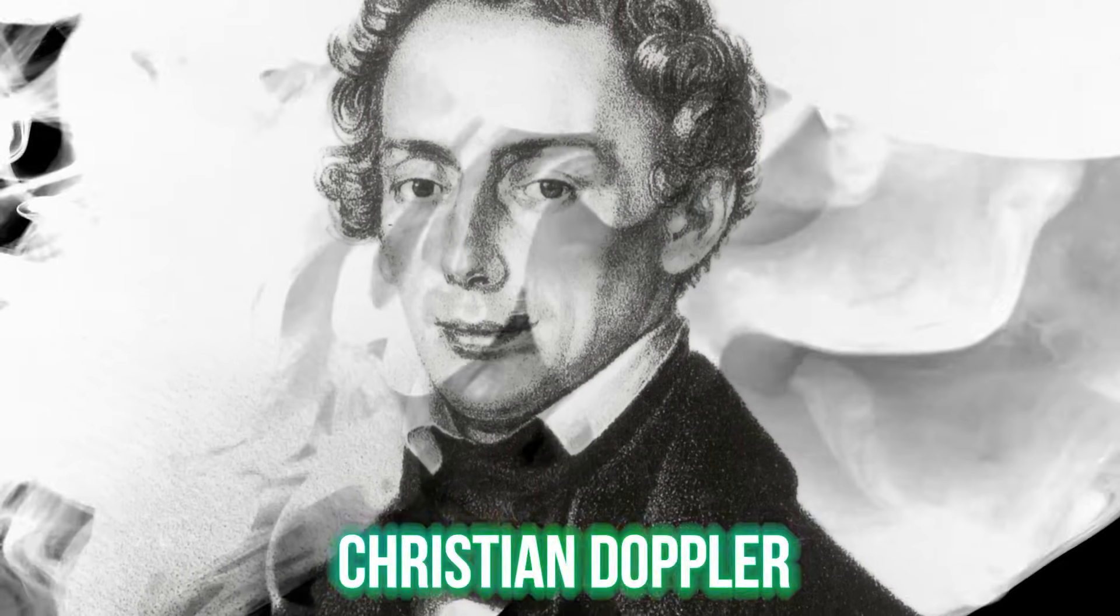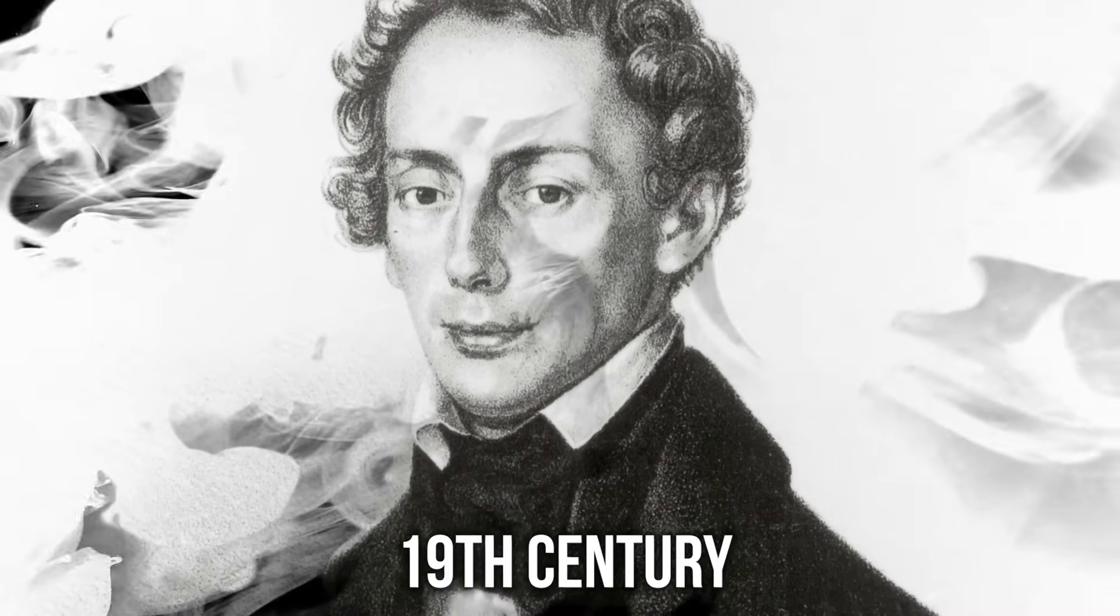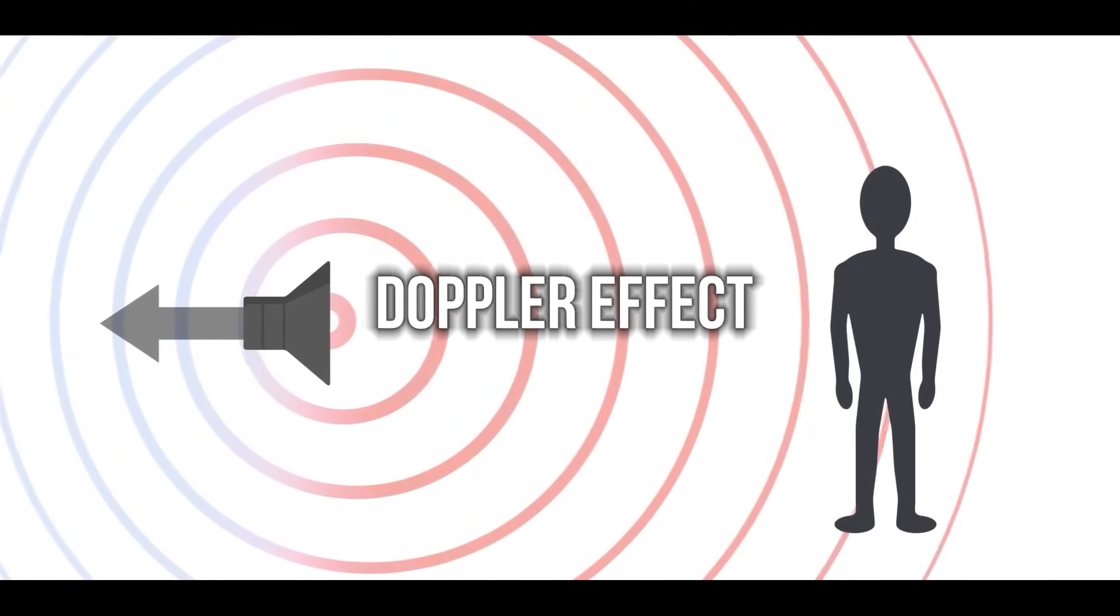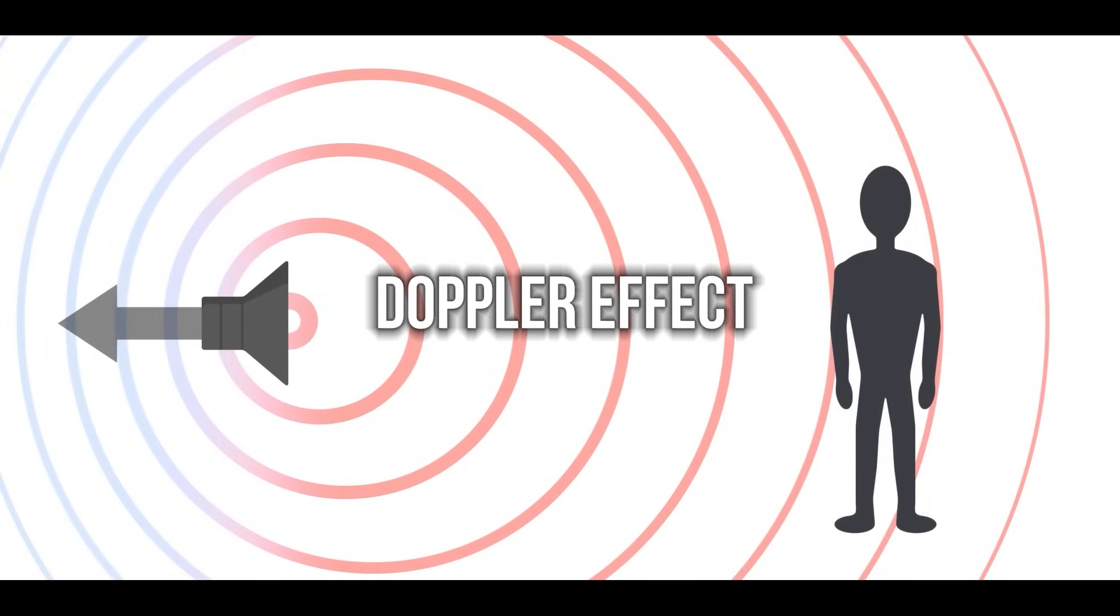The story starts with an Australian mathematician and physicist named Christian Doppler, who lived in the 19th century. Doppler was trying to explain a peculiar phenomenon related to electromagnetic waves. When an observer moves closer to the source of a wave, the length of that wave decreases. And if they move away, it increases. We now call this the Doppler effect, and it applies to all types of waves.